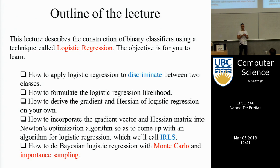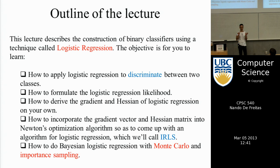That will be the frequentist approach to learning the parameters. The frequentist approach believes there is one true value of the parameters, and we will try to find that single value during optimization. I will then discuss how to do approximate Bayesian computation — we will introduce a prior, and we'll have a likelihood and a prior that will allow us to derive a posterior distribution.